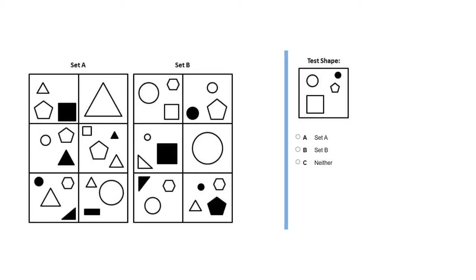If we have a look at the first question, this is probably the commonest type of abstract reasoning question. What they do is give you two sets of pictures. You have to look at the six pictures in Set A and try to find a rule which all those pictures adhere to — the rule that governs membership of Set A — and then find a different but related rule that governs membership of Set B. You can then look at each test shape and say: does that fit in Set A, does it fit in Set B, or does it not fit in either of them?